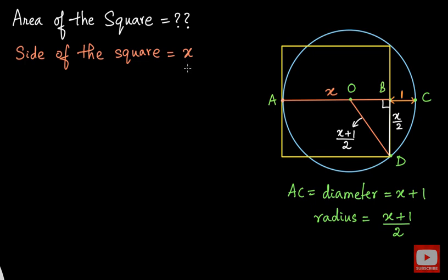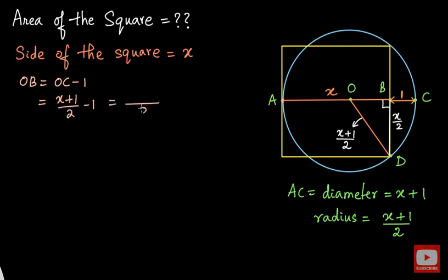If we get the value of x, then we can easily get the area of the square. Our goal is to find the value of x, and for that I want the length OB. From the figure, you can observe that the length OB is nothing but the radius OC minus that 1 unit. So OB equals x plus 1 upon 2 minus 1, which simplifies to x minus 1 upon 2.